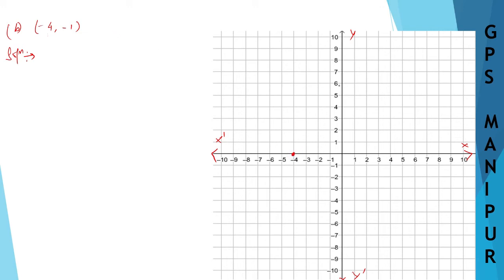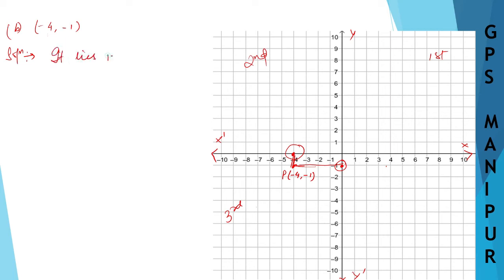And minus 1 on the y-axis is here. So you need to draw the point. Take a straight line and join these two lines — this is your point P, which is (-4, -1). First you plot for x, then for y, and join the line to get the point. This is first quadrant, second quadrant, third quadrant — so this point lies in the third quadrant. Let us do the next question, Roman numeral C.